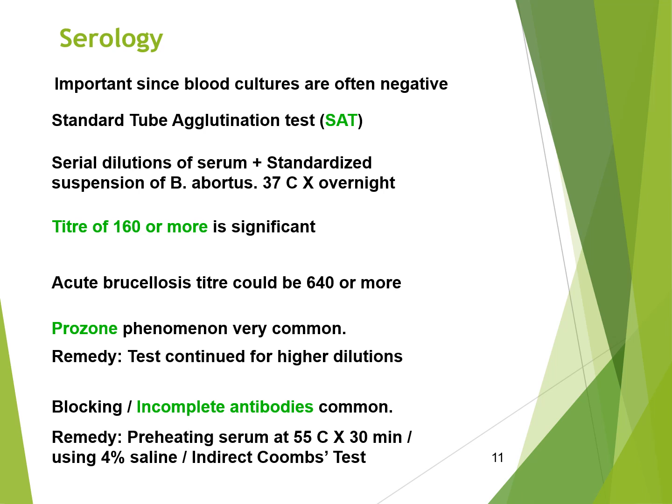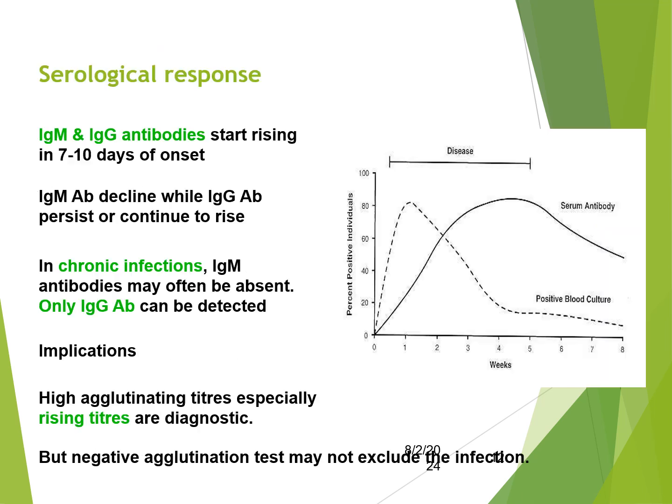For serology, the standard tube agglutination test involves serial dilutions of serum with a standardised suspension of Brucella abortus, incubated at 37 degrees overnight. A titre of 1:160 or more is significant. A titre for acute brucellosis could be 1:640 or more. The test continues for higher dilutions. Blocking and incomplete antibodies are common, and the remedy is preheating serum at 55 degrees for 30 minutes, using 4% saline, and the indirect Coombs test. IgM and IgG antibodies start rising within 7–8 days of onset, with IgM declining while IgG persists.